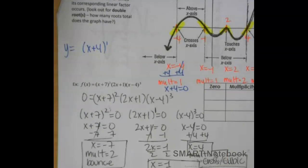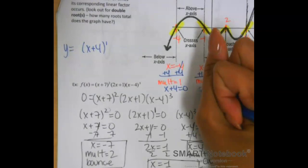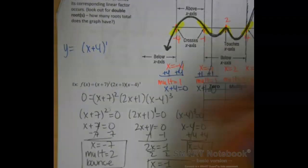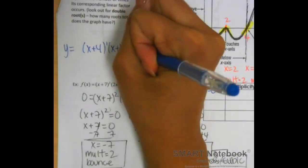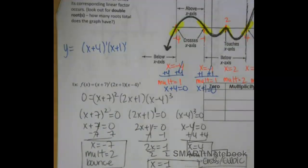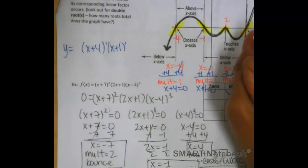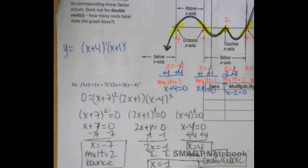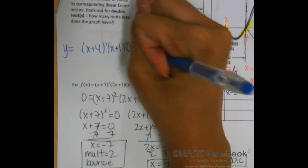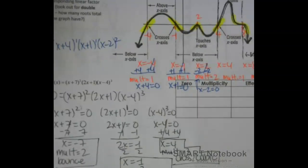For x equals negative 1, add 1 to both sides, giving x plus 1 equals zero, with a multiplicity of 1. For x equals 2, subtract 2 from each side, giving x minus 2 equals zero. The multiplicity for that is 2. Now do the same thing for the last two — make them equal to zero and write out the binomials at the end of your equation.